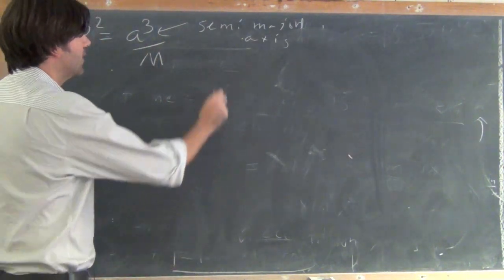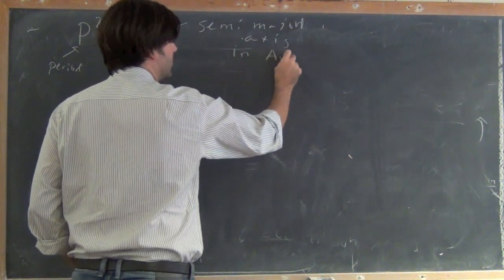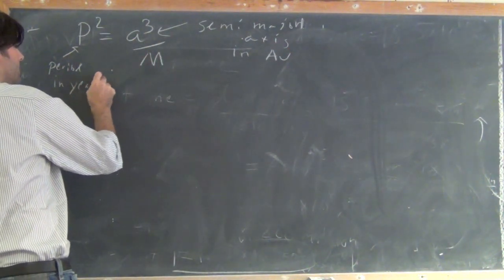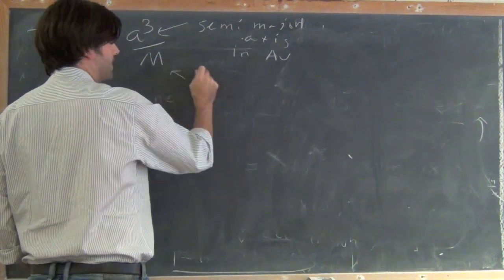Remember this is true where the semi-major axis is written in astronomical units, the period is written in years, and the mass is written in solar masses.